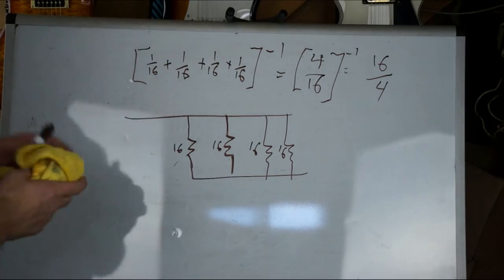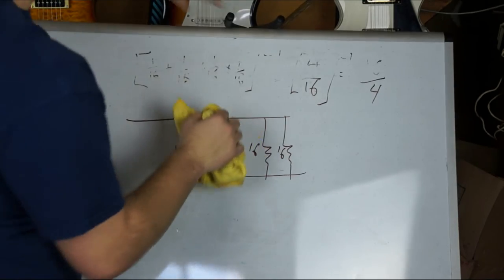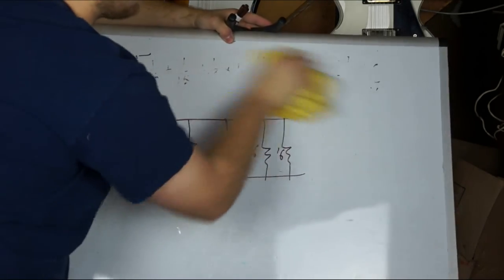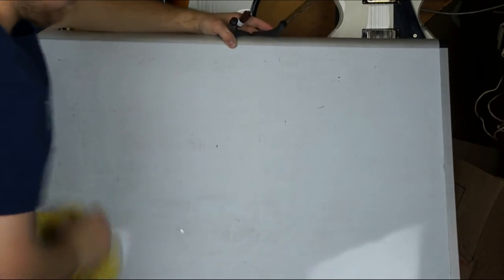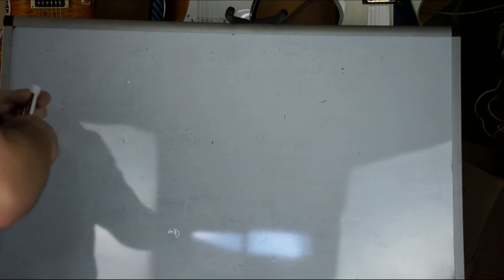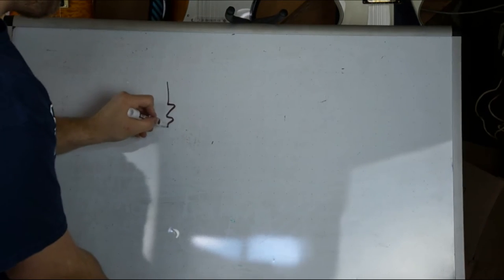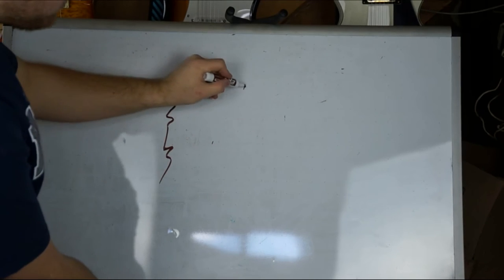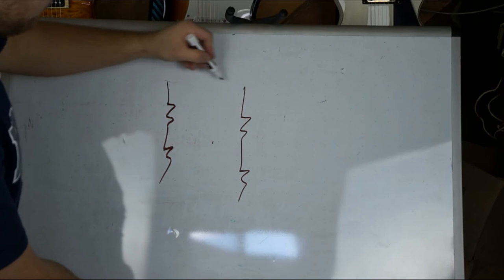There's another way that most four by twelves are wired, and it's called series parallel. So what that's going to be is you've got two speakers in series. You have another two speakers in series. And then those are in parallel.